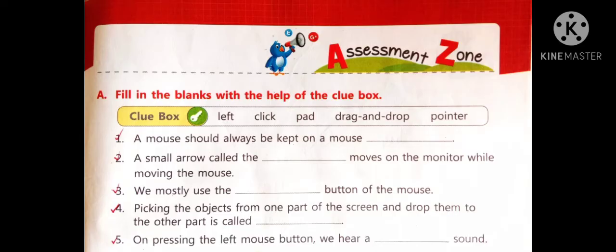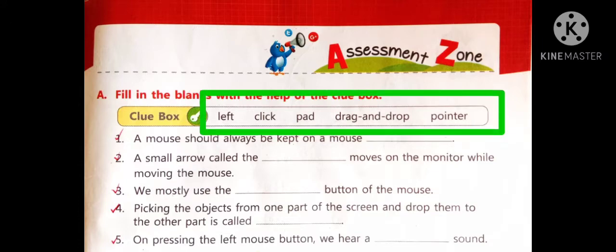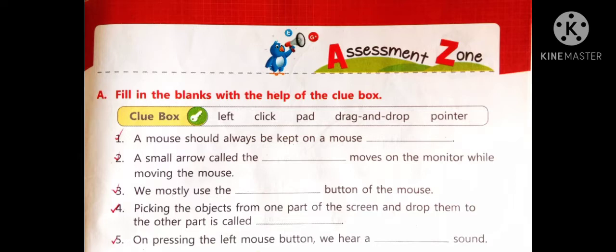A number. Fill in the blanks with the help of the clue box. The clue box includes left click, pad, drag and drop, pointer. These are the clues given in the box. Now, one number.